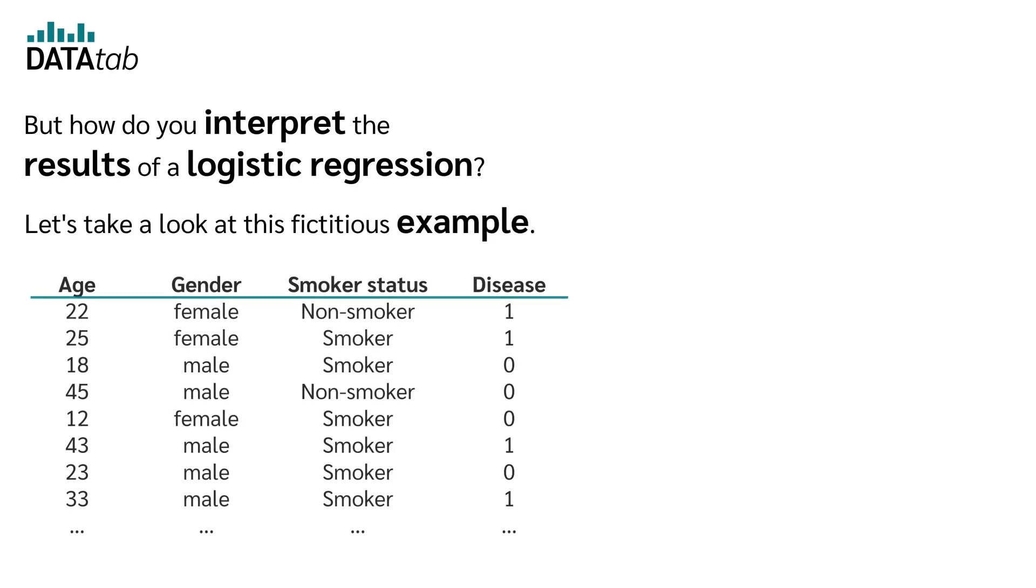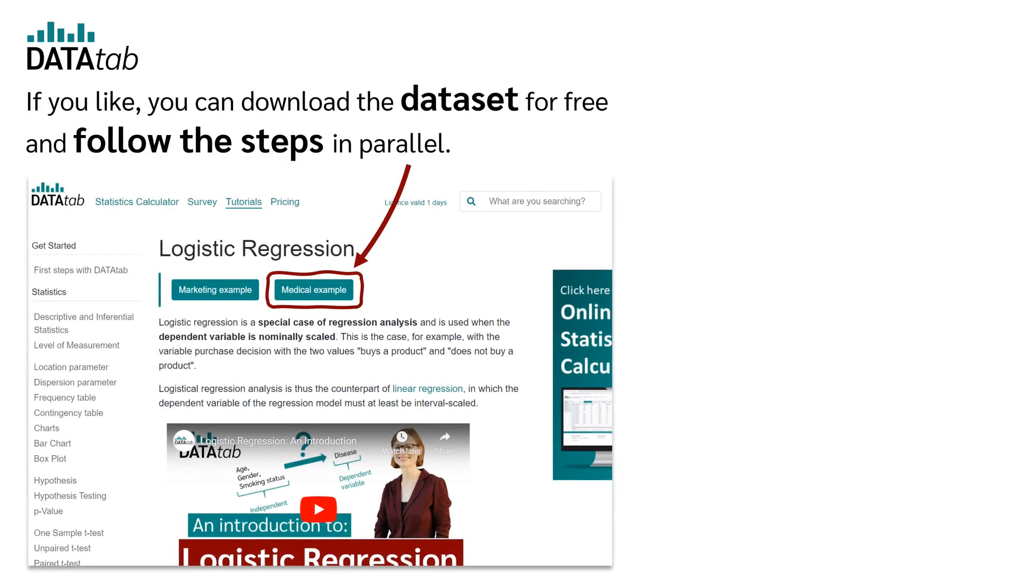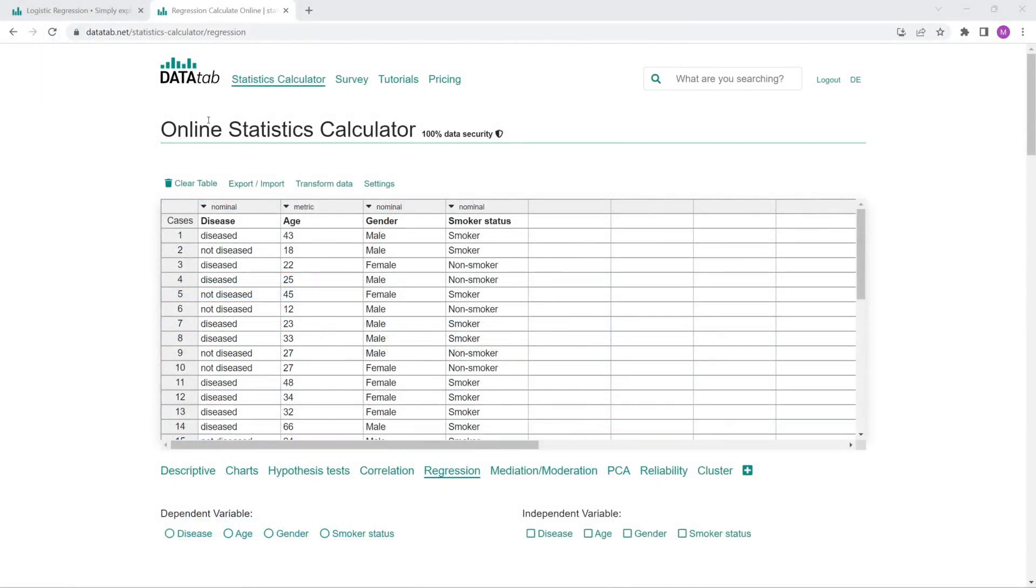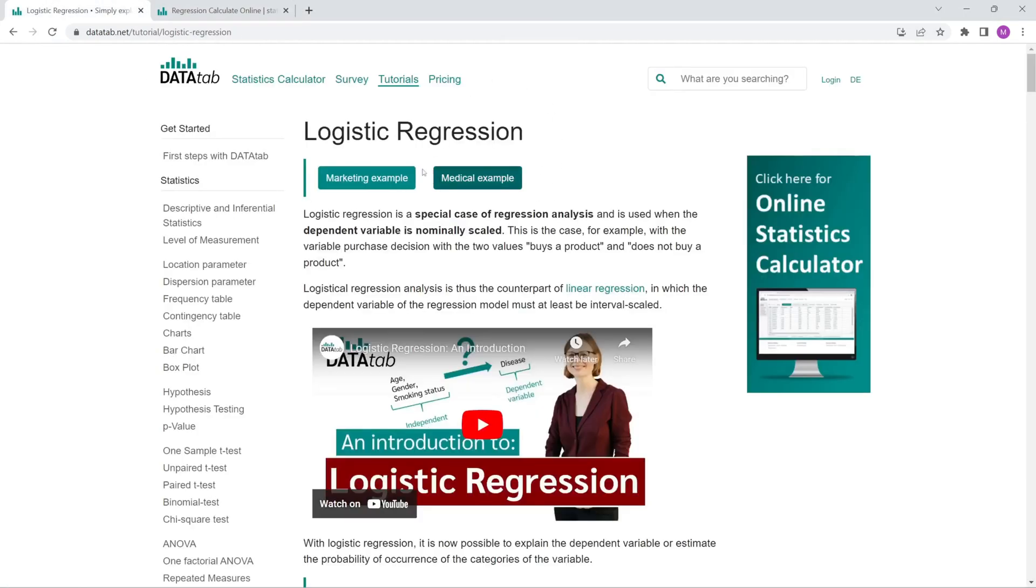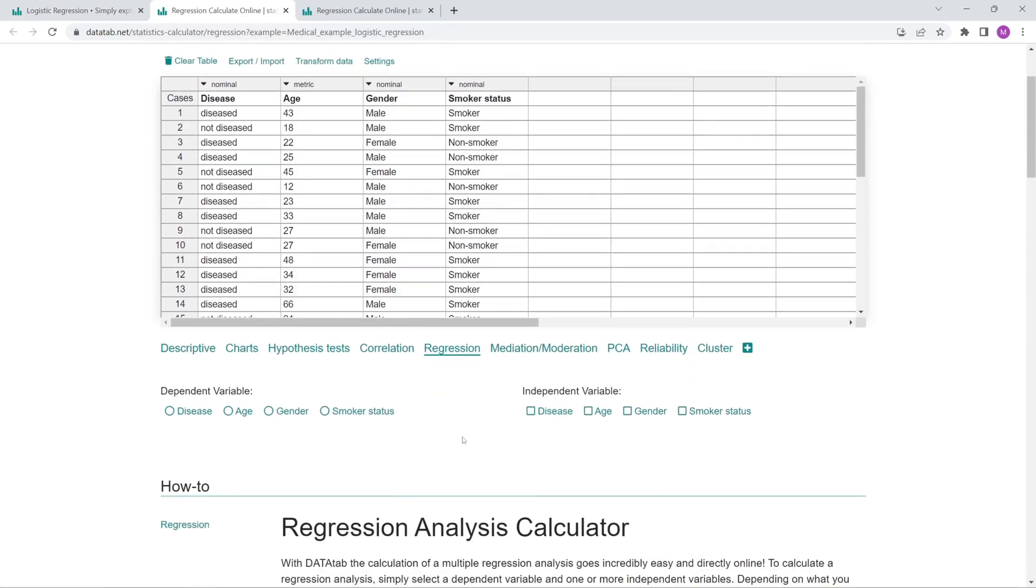But how do you interpret the results of a logistic regression? Let's take a look at this fictitious example. For this, we first compute a logistic regression for these data on datadap.net. If you like, you can download the dataset for free and follow the steps in parallel. You can find the link in the video description. We go to datadap.net and copy our own data into this table. I just already loaded the dataset from the link. When we copy our data in here, the variables show up down there.